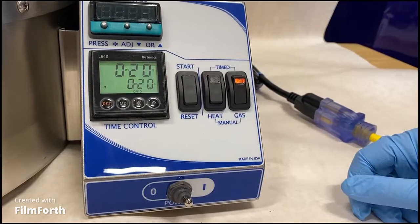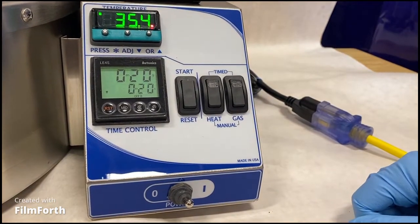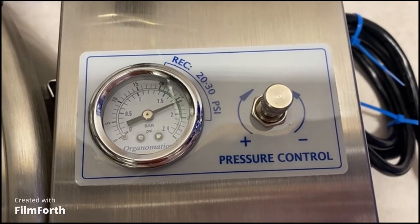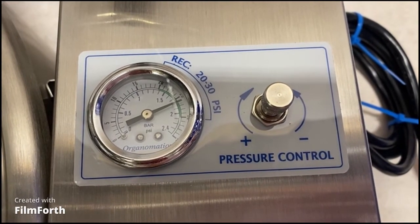To check the instrument's built-in pressure regulator, turn off the gas switch but leave the gas source on and connected. If the pressure gauge reads between 20 to 30 psi, the regulator is working. If not, it may need to be adjusted.